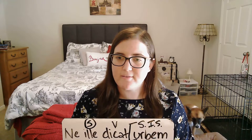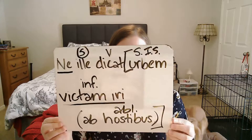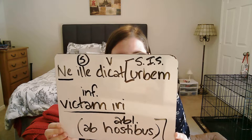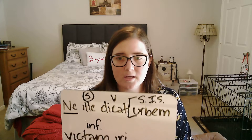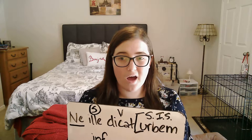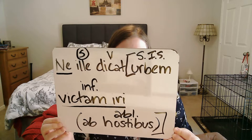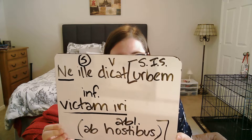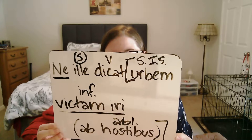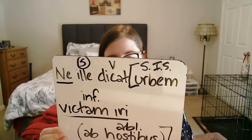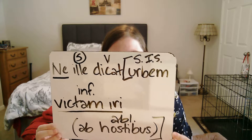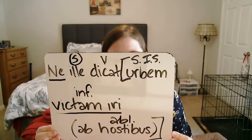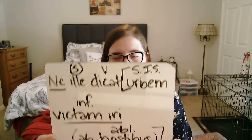By the enemies — 'ab hostibus' is a nice ablative of agent there. So again, the beginning of our sentence: 'ne ille dicat' — let him not say, or perhaps don't let him say. The 'ne' gives us the 'not'. Let him not say that — subject of our indirect statement — 'urbem', the city, 'victum iri' is future passive so it's happening in the future: will be conquered, 'ab hostibus', by the enemies. Altogether: let him not say, or don't let him say, that the city will be conquered by the enemies.